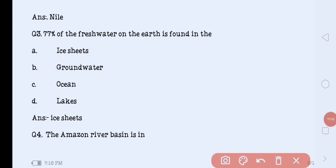Our next question is 77% of fresh water on the earth is found in the ice sheets, ground water, oceans or lakes. The correct answer is ice sheets.